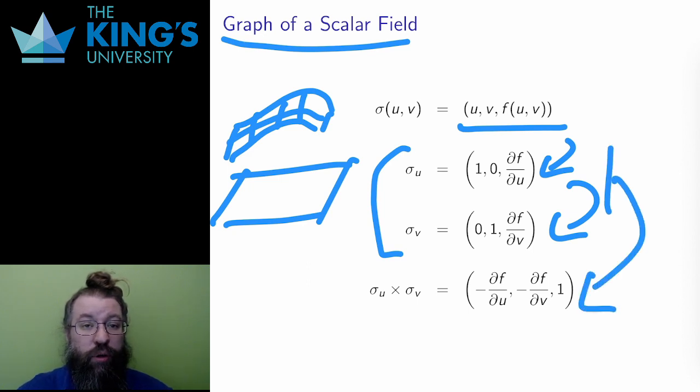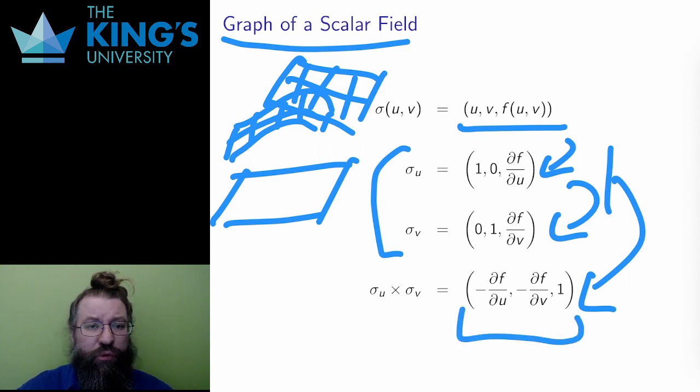If you think back to week four, I calculated the normal for the tangent plane to a two-variable scalar field. Well, this is precisely the same normal. And hopefully that makes sense, because I'm calculating the same idea here. The direction that is locally perpendicular to the surface. I'm just doing it now in a parametric form, but the same vector results.